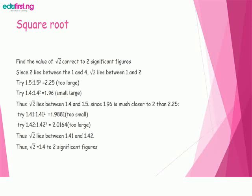Since 2 lies between 1 and 4, square root of 2 lies between 1 and 2. Try 1.5: 1.5 squared equals 2.25, so that one is too large. Try 1.4: 1.4 squared equals 1.96, that one is too small. Thus square root of 2 is between 1.4 and 1.5.